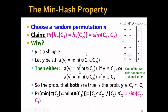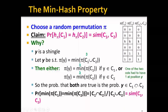In this example, that happens to be the case. That basically means that the probability that both statements are true is actually equal to the probability that this shingle y is in the intersection of C1 and C2. So what is the probability that this shingle y is actually in the intersection of C1 and C2? It is the Jaccard similarity. So we have already completed the proof, showing that the probability that the hash value of C1 and C2 is equal is actually equal to the Jaccard similarity of C1 and C2.